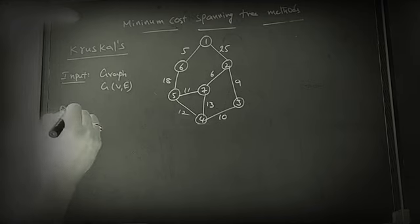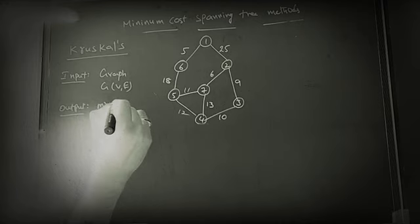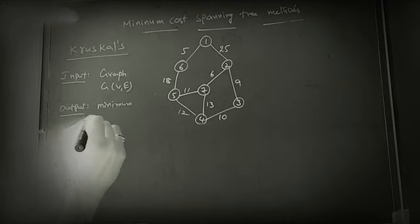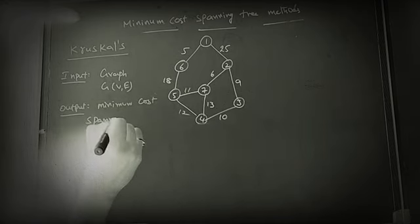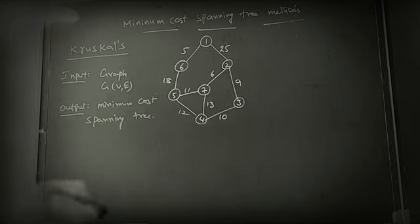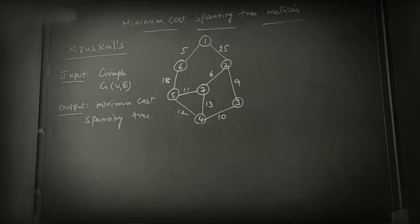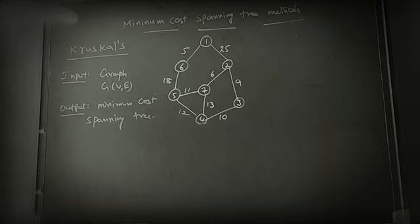Then output should be minimum cost spanning tree. Minimum cost spanning tree in the sense the tree doesn't have any cycles or loops. If the tree is going to form a cycle, that edge is ignored. Take an alternate edge which is not going to form a cycle.